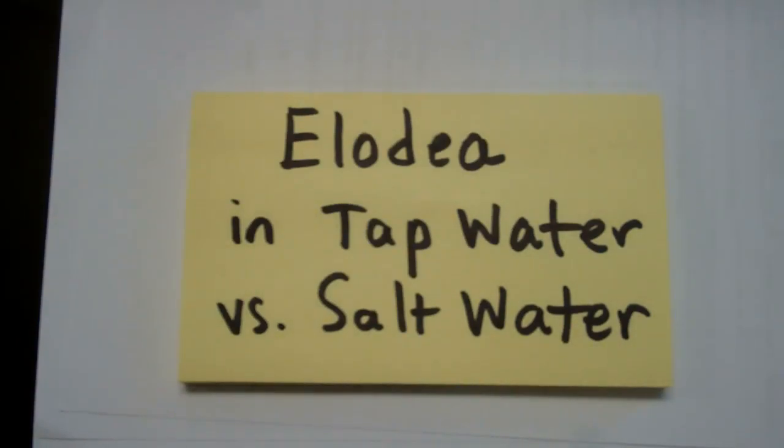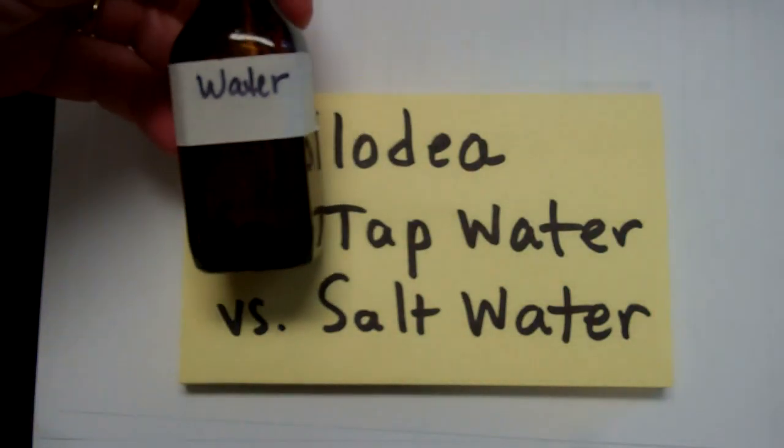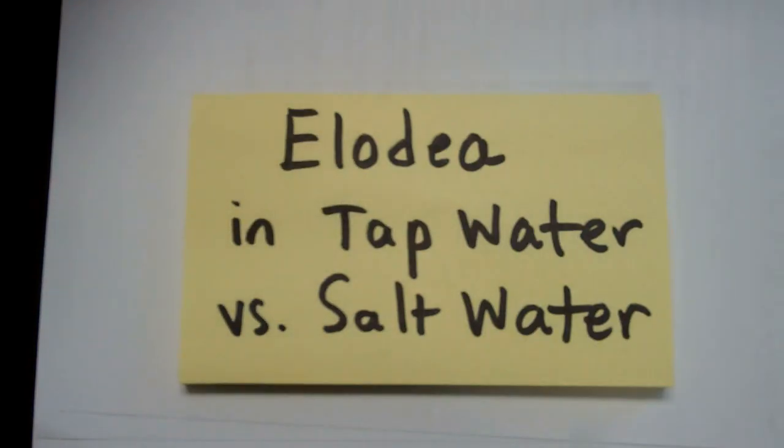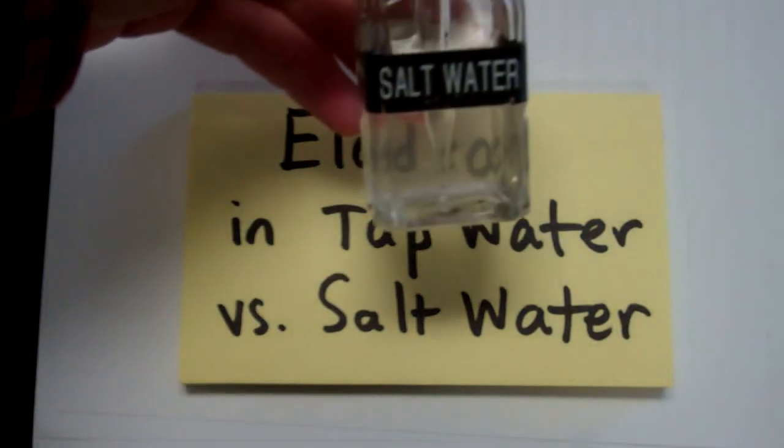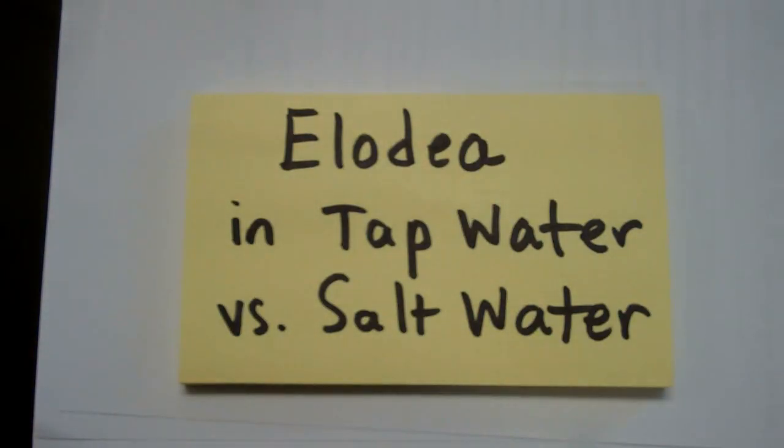Today we're looking at Elodea, which is a water plant, and we're going to put it in tap water, and we're also going to put it under some salt water and see the difference. We're studying about water moving in and out of cells, so this is a great lab to see this in action.